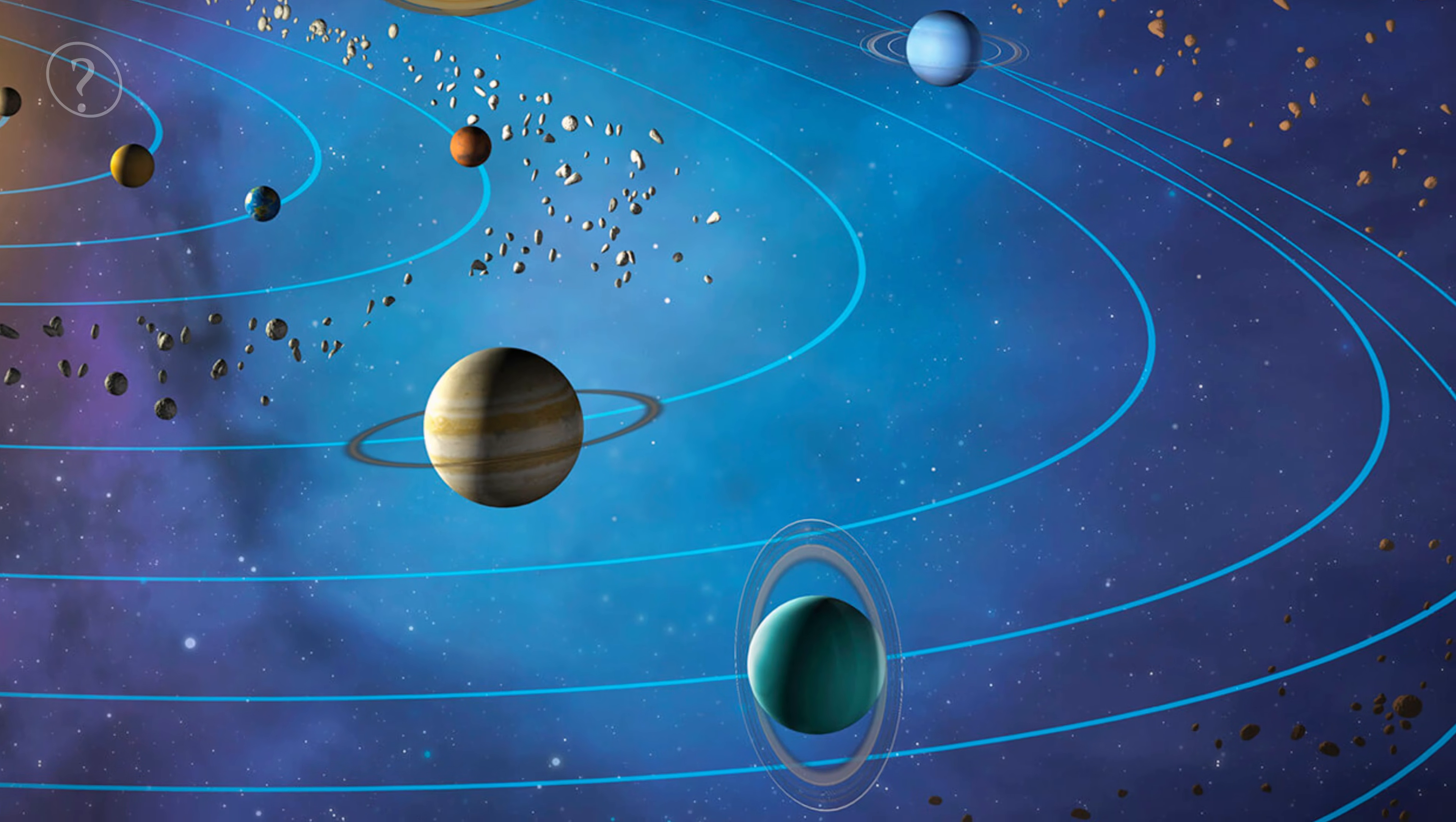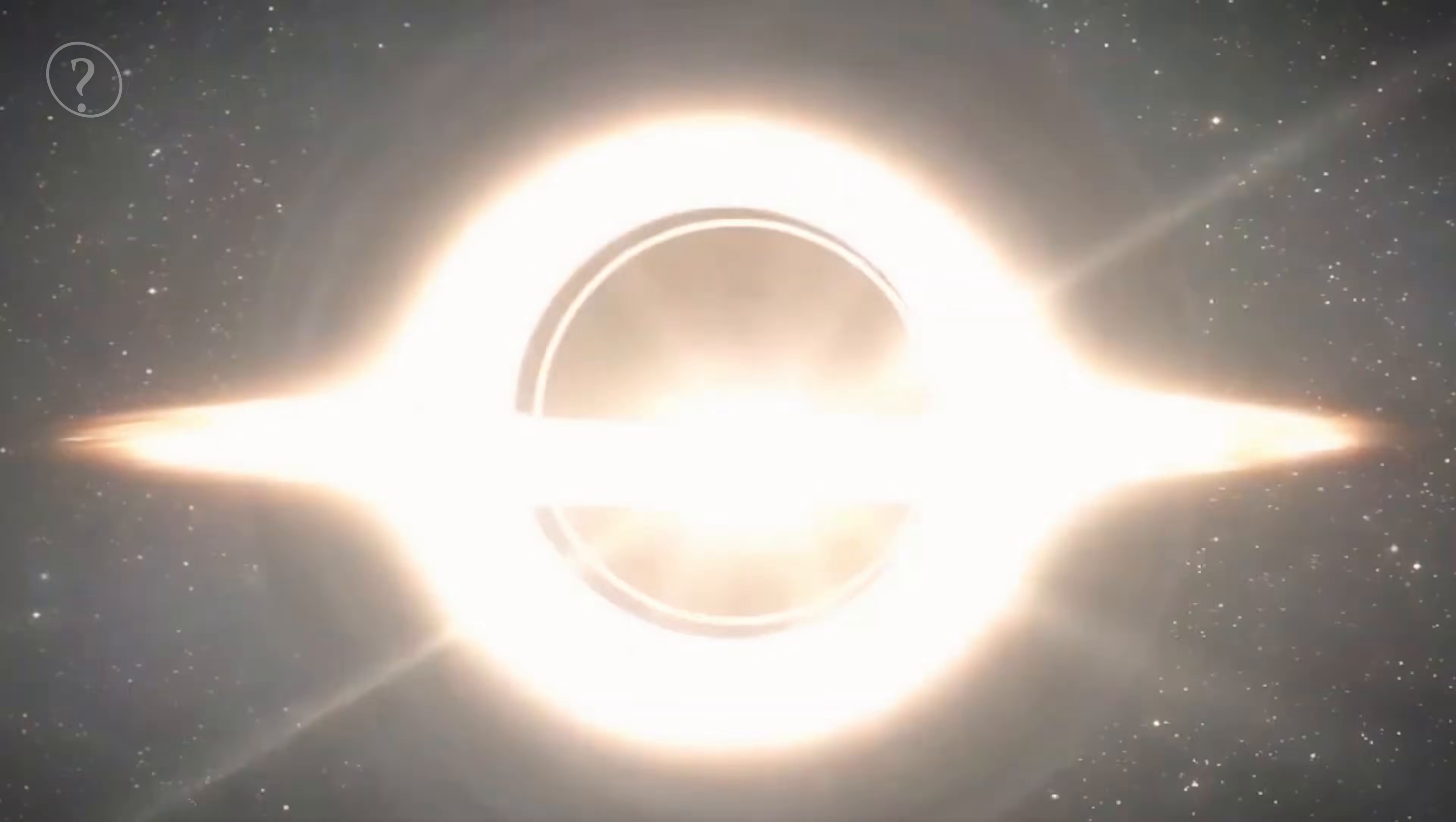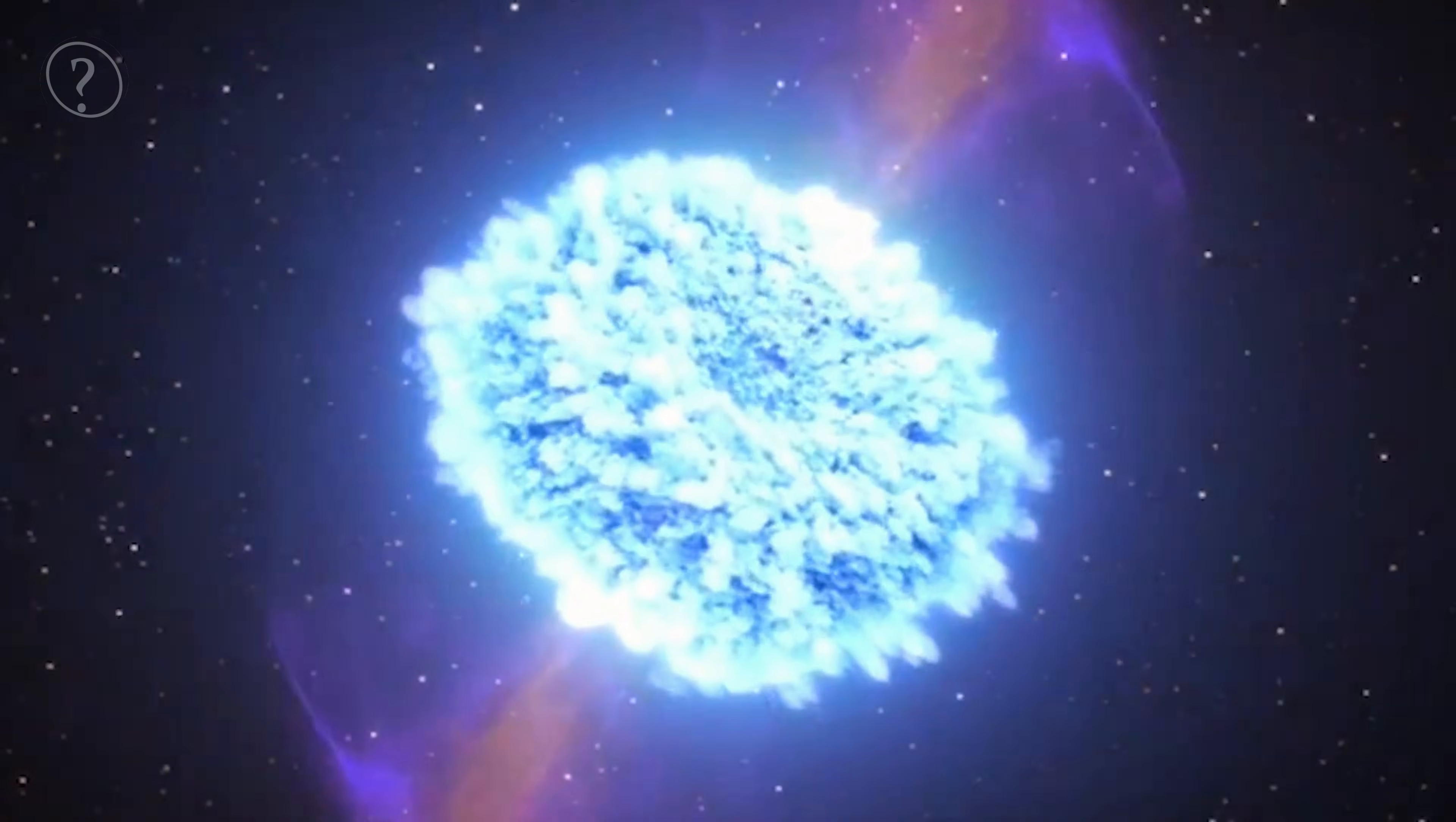But here's the crazy part. Despite its colossal size, UY Scuti is still a fleeting giant in cosmic terms. Stars like UY Scuti only live for a few million years before they burn out their nuclear fuel. After that, they either collapse into a black hole or explode as a spectacular supernova, transforming into something completely different. This short lifespan is a stark reminder of the dynamic and ever-changing nature of the cosmos.